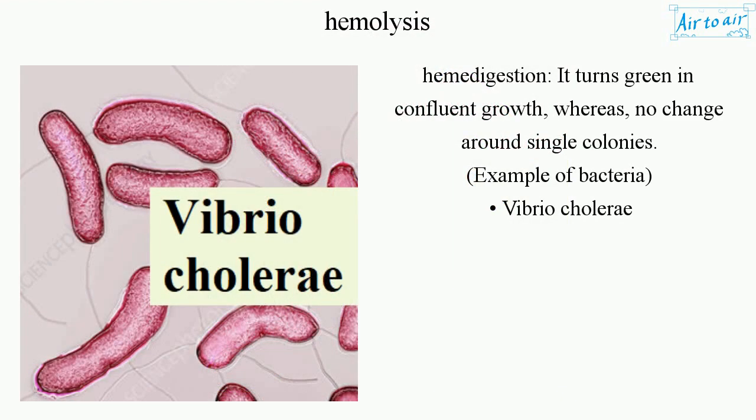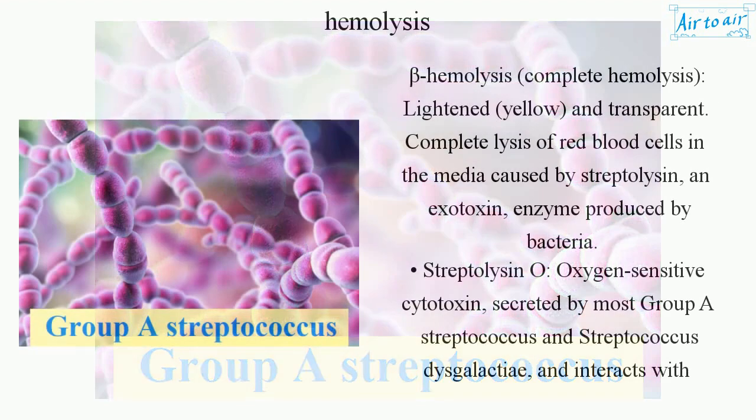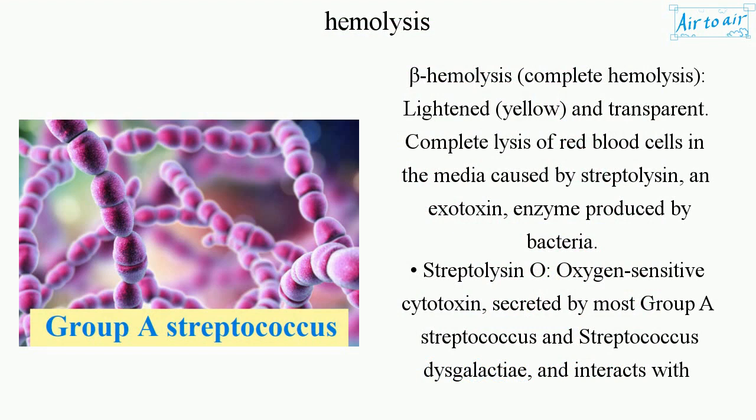With hemodigestion, it turns green in confluent growth, whereas there is no change around single colonies. An example is Vibrio cholerae.